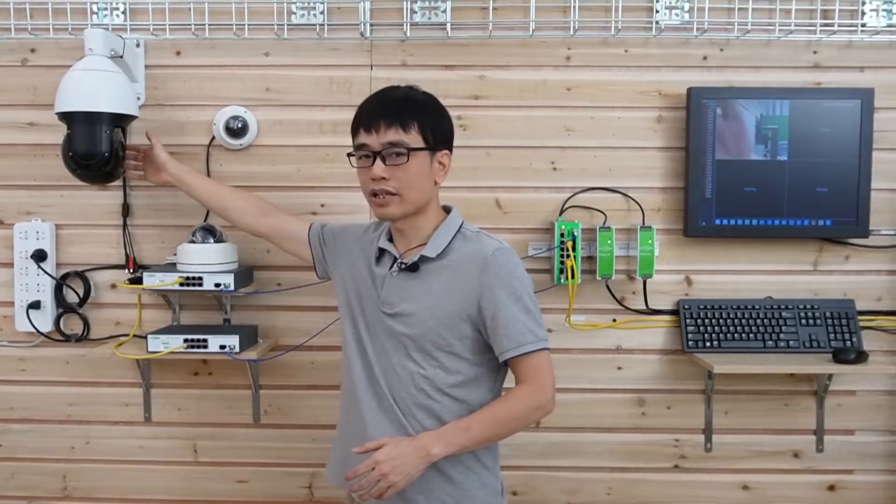The first equipment is the cameras. This is the Pan-Tilt-Zoom camera. You can pan, tilt and zoom. You can see the size is pretty large. Usually we will deploy this large camera outside the perimeter.